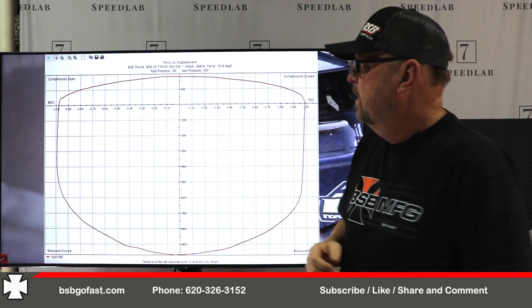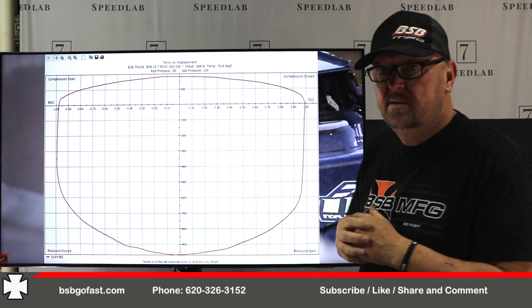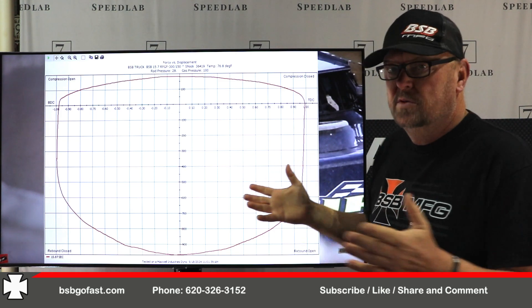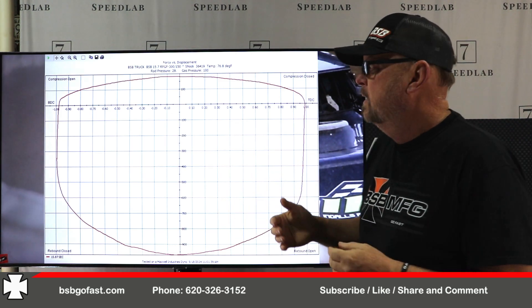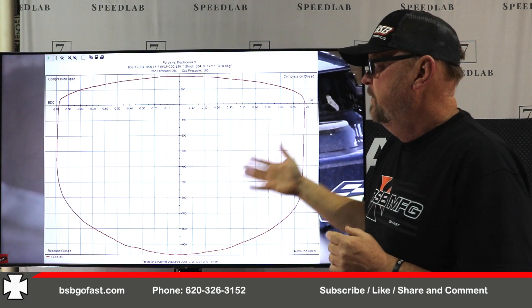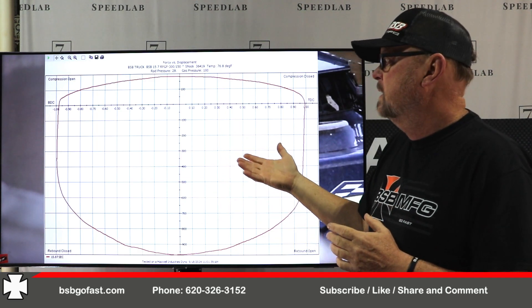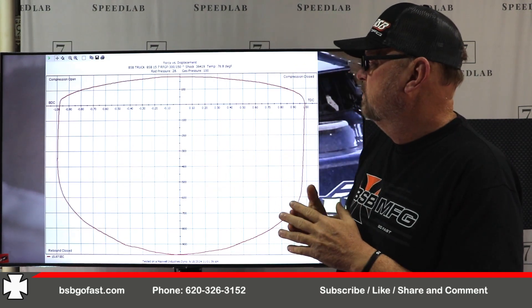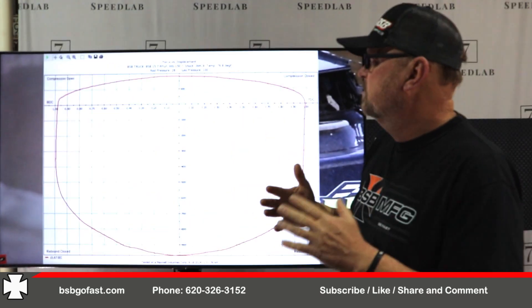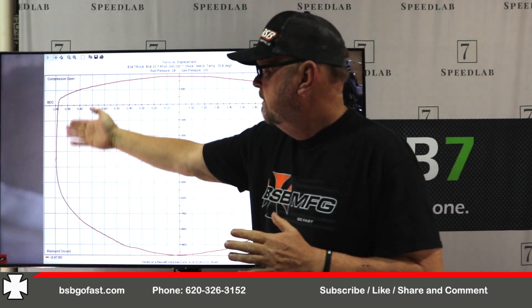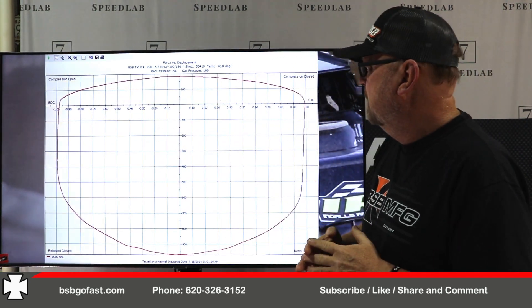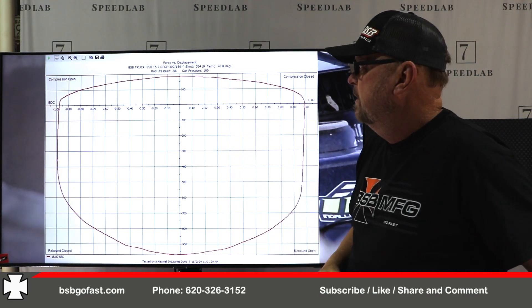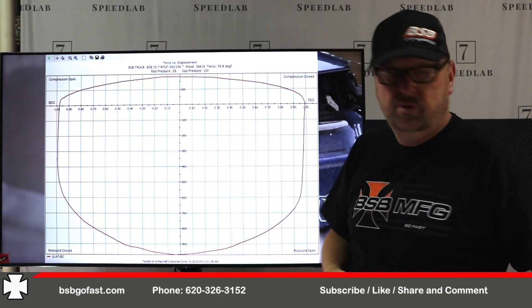This is force versus displacement, sometimes called the football chart or the oval chart. If you have a pin graph, this is what you're going to get. It's a little harder to read, but it kind of goes back into the average — compression on top, rebound on bottom. Some people prefer this chart.